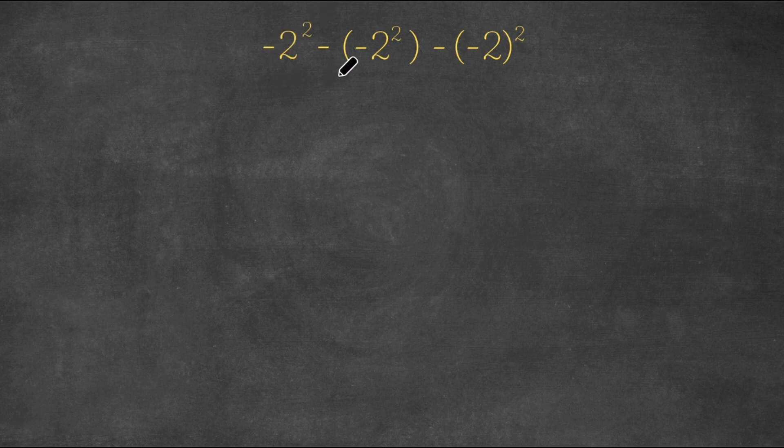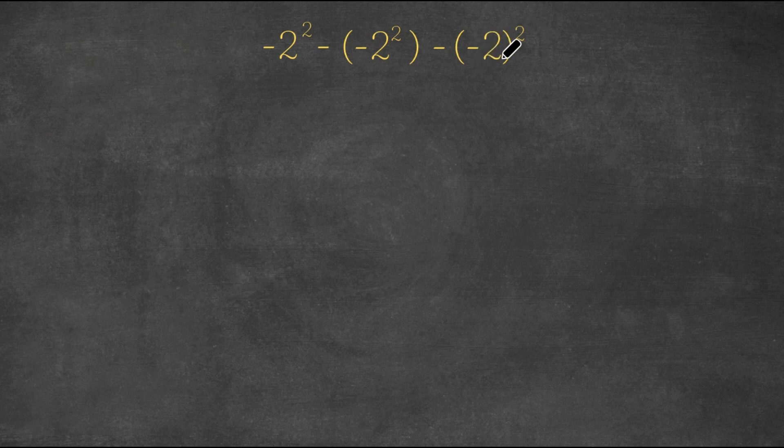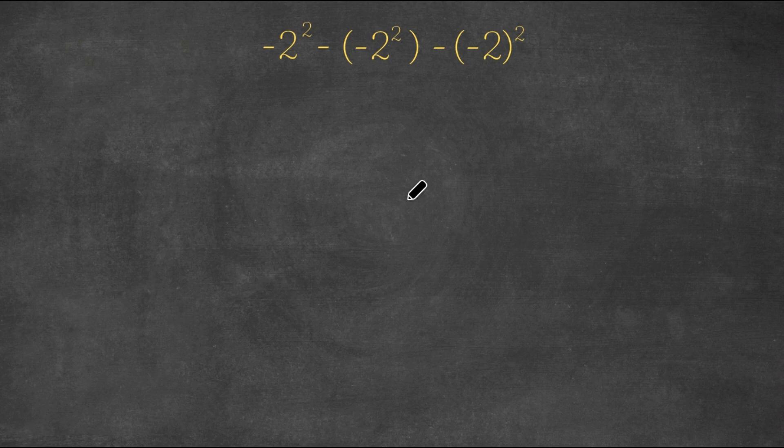I'm going to be teaching you how to solve this simple problem that many people actually get wrong. So we have -2² - (-2)² - (-2)². Now to solve this problem, let's actually solve it with each individual term. As you can see, we have three terms here.